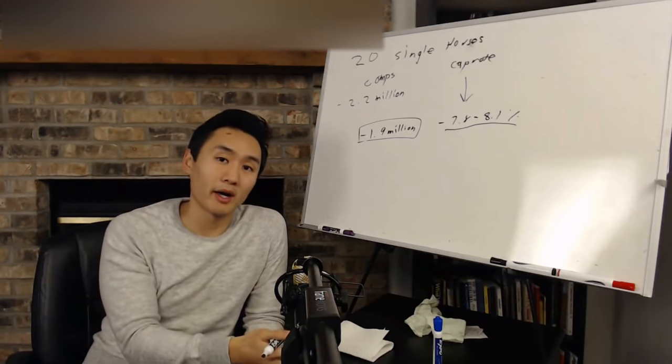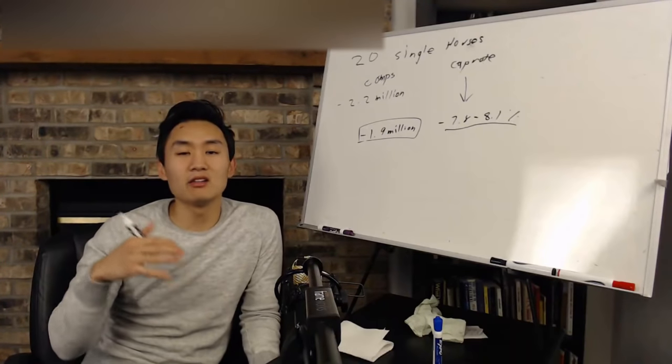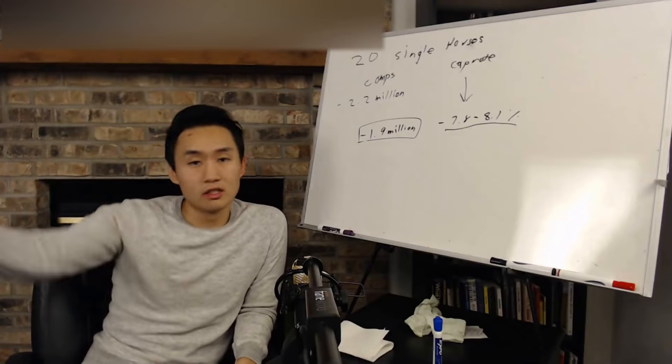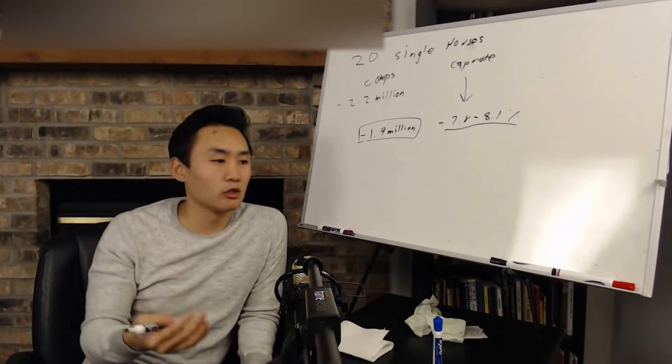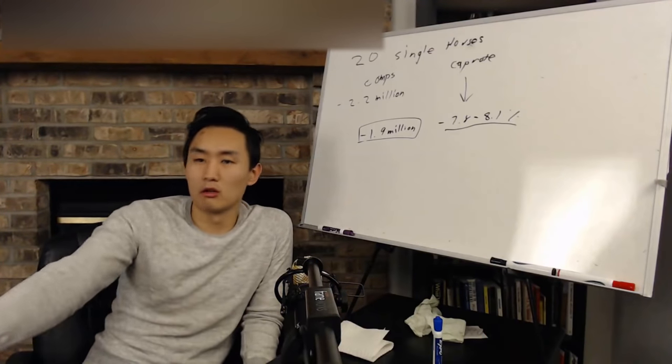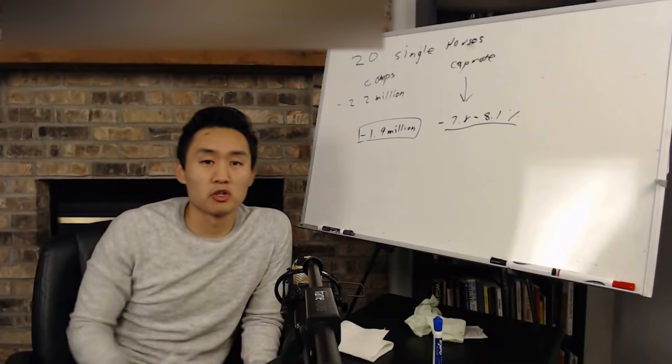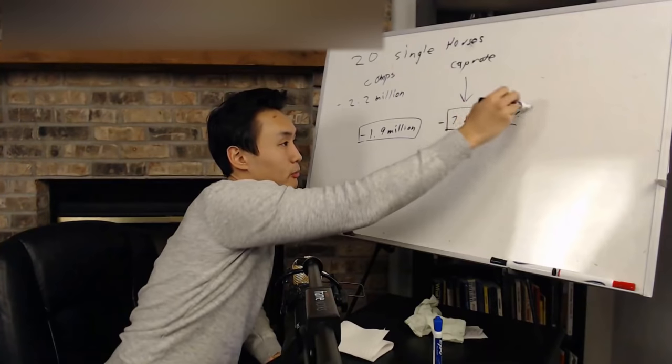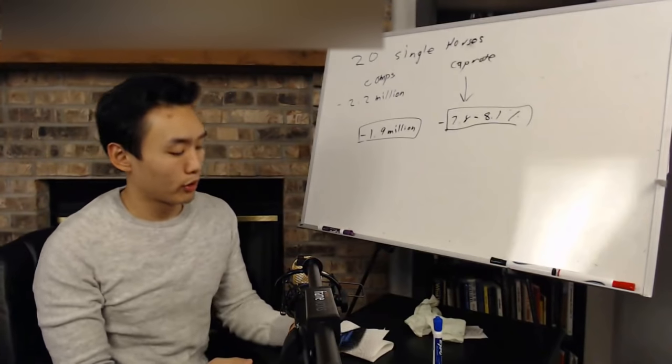I always say with any deal, 95% of deals, there's pros and cons. And it's a good deal based on this guy. It's a bad deal according to person B, good deal according to person A, great deal in terms of person C. So let's go back to the deal. So cap rate ranges about 7.8% to 8.1%.